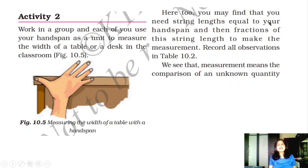Here too you may find that you need string length equal to your hand span and then fractions of this string units to make the measurement. Each your hand palm is one unit, like in the scale 1 cm to 15 cm there in the scale. So each your hand palm is one unit. How many units you have recorded? Use your hand spans, you will get different, different length depending on the size of your palm.